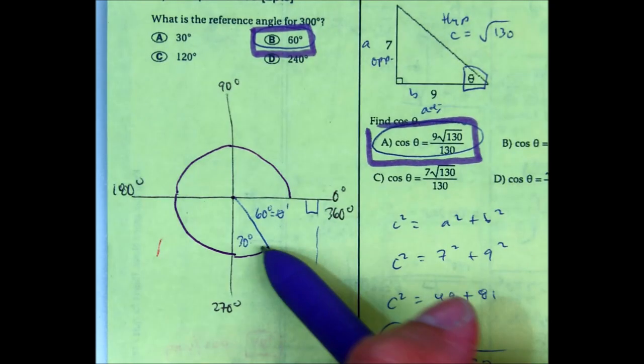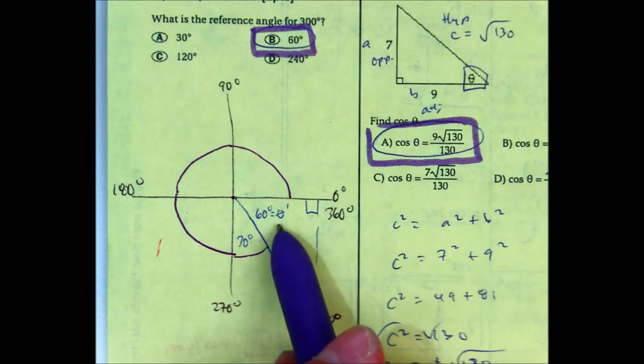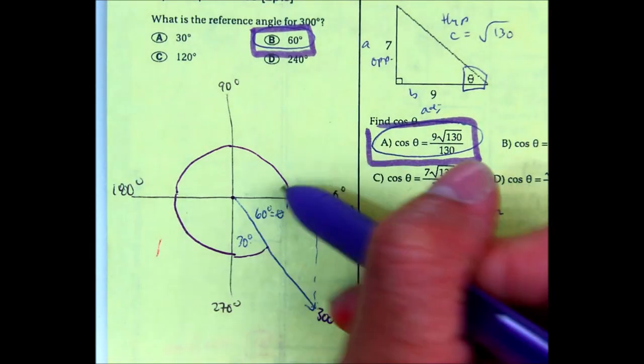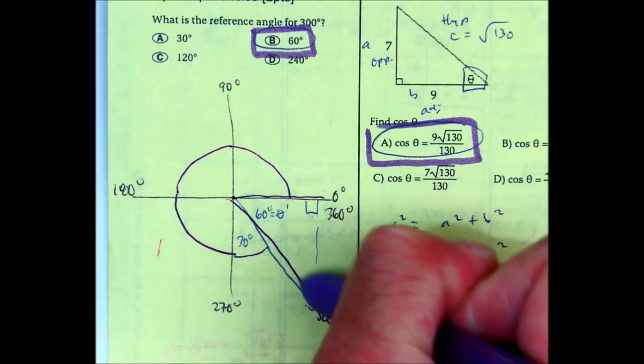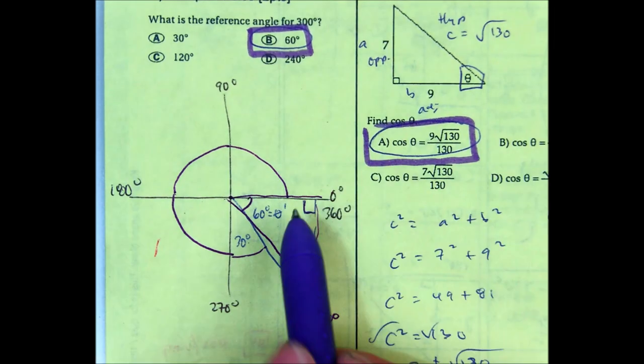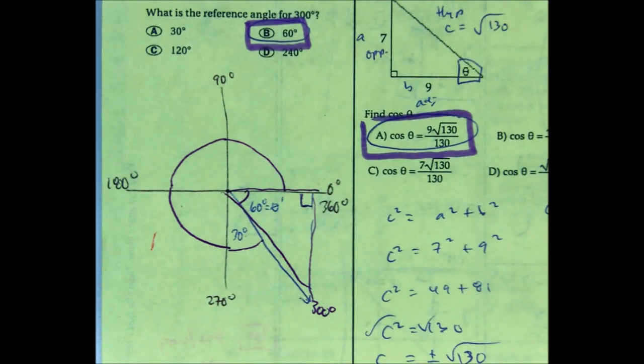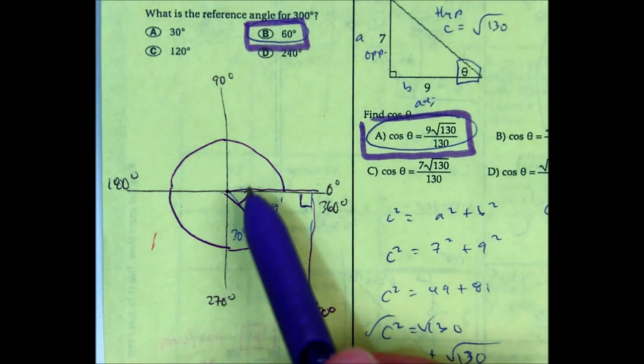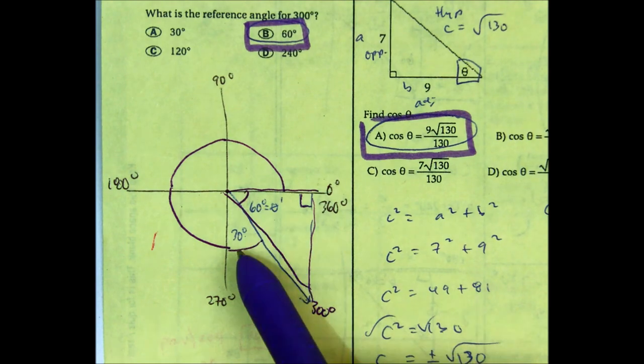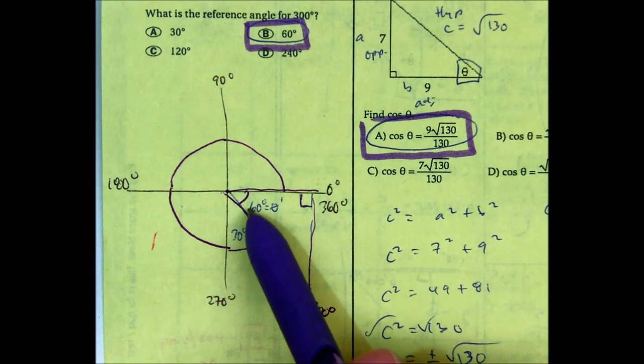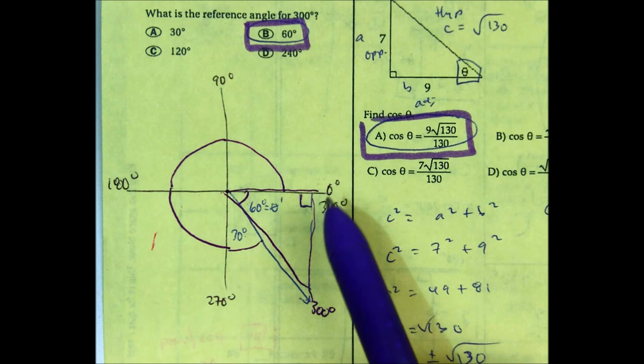So there's only 60 degrees left. Therefore, your reference angle, this is the bow tie part, this angle here is 60 degrees. So your answer would be B. Notice that the reference angle and the other angle, 30, are complementary. Blank plus blank equals 90 degrees.